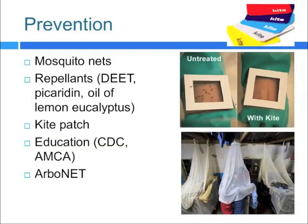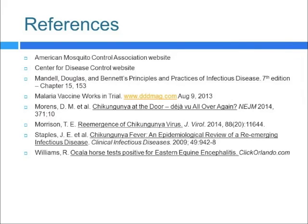Prevention of any of these illnesses can be achieved with mosquito nets and repellents. There's also a kite patch — a tag you can wear on your clothing — that contains medications to repel mosquitoes. Educate patients on how to protect themselves and prevent mosquito breeding through frequent removal of stagnant water. There's also a resource called ArboNET, developed by the CDC, that keeps track of mosquito outbreaks in the U.S. Thank you.